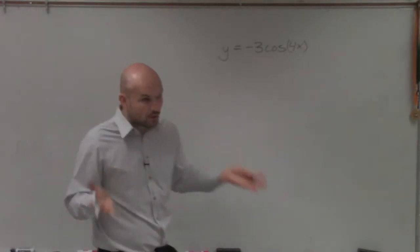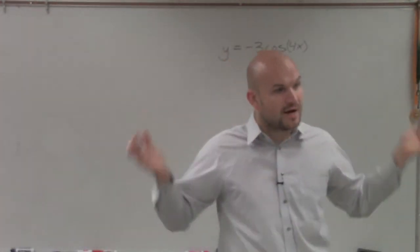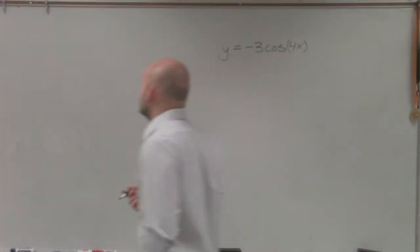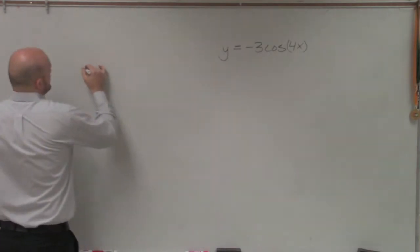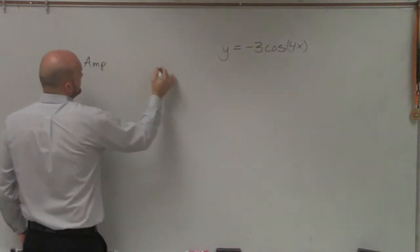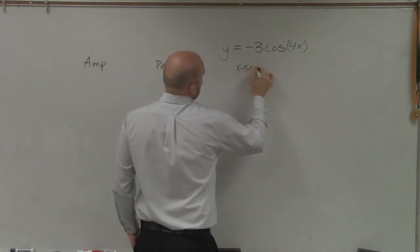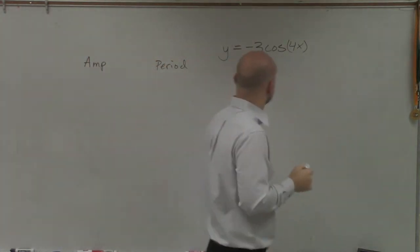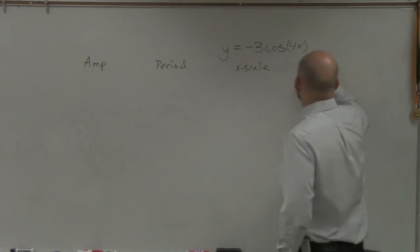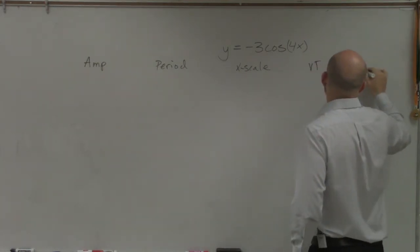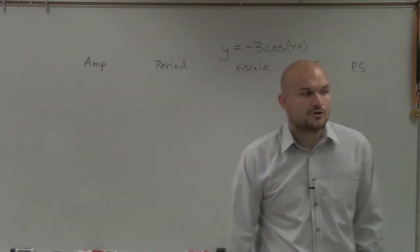So when graphing the cosine, there's a couple things we want to make sure we understand is knowing the important points. When we started this, I always say write down, you have to know how to find all those important points. So we're going to have amplitude, period, x scale, vertical translation, and phase shift.